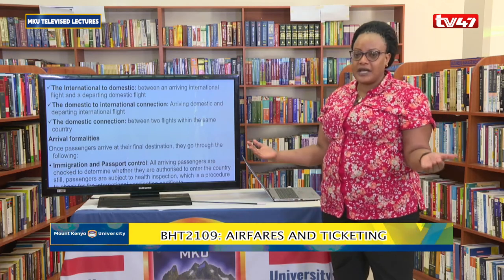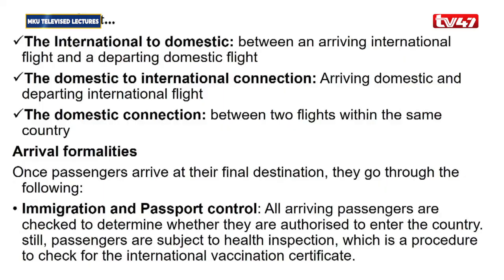Then we go to the arrival formality. As a passenger, you should know what is required once you have arrived at your final destination. Once passengers arrive at their final destination, one of the first things is immigration and passport control. Immigration and passport control is whereby all arriving passengers are checked to determine whether they were authorized to enter the country they have arrived in.